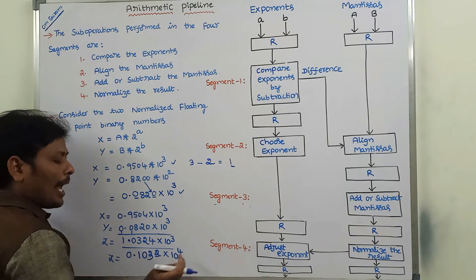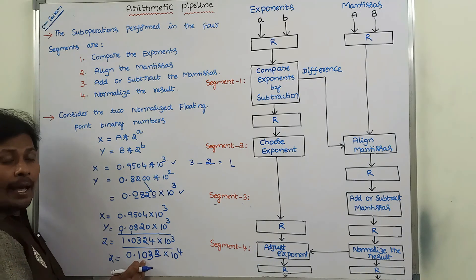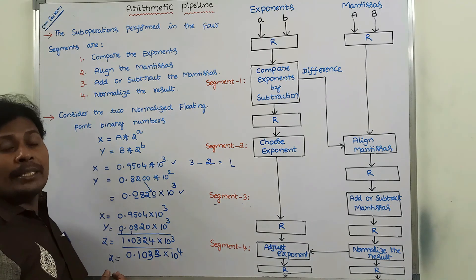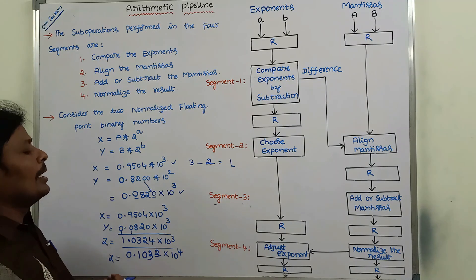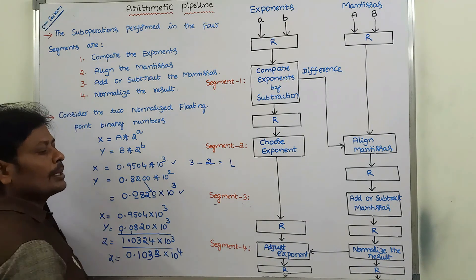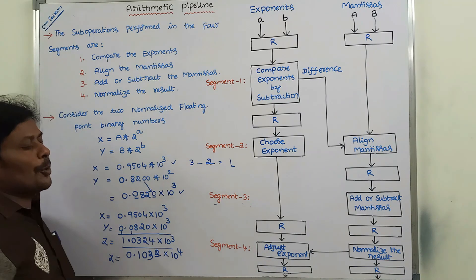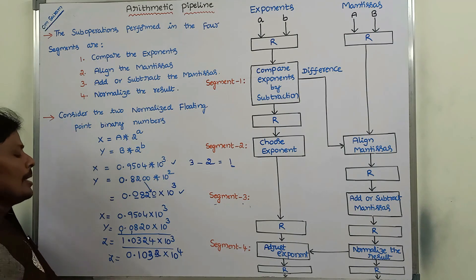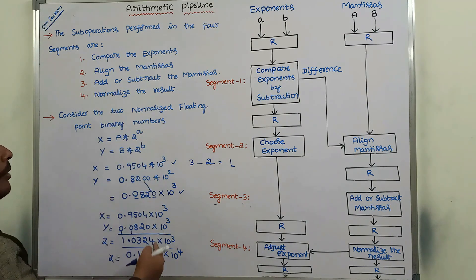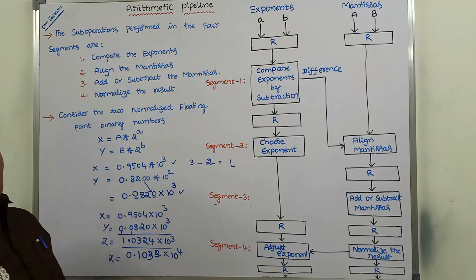To adjust the exponent value, we are adjusting the mantissa by shifting each and every bit towards right by one position. This is done in segment 4. Whatever the result we are getting, that result is stored in temporary register R. In this way, we perform the floating point addition or subtraction operation using the Arithmetic Pipeline.